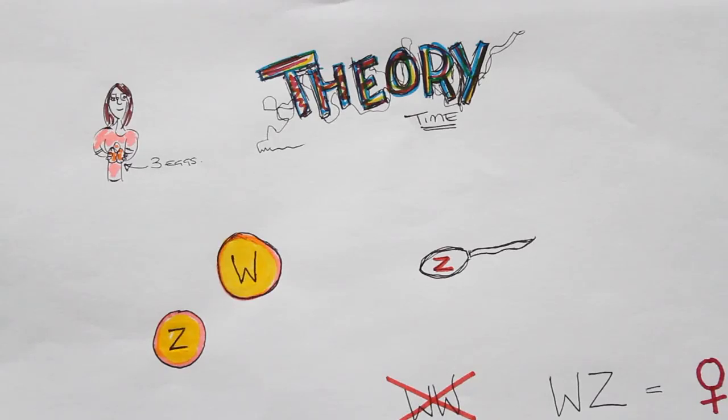There are a few theories as to why parthenogenesis happens, and one that seems most likely is that it is an evolutionary trait passed down through the generations — a trait that in some ways saved species from dying out.